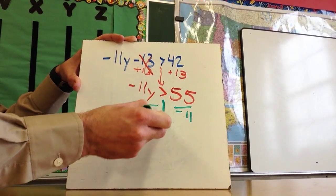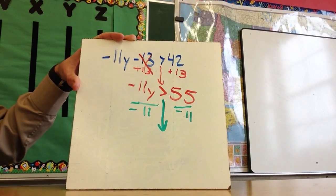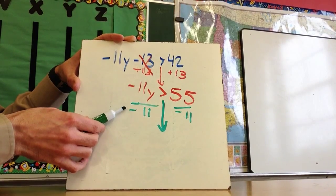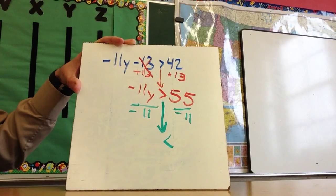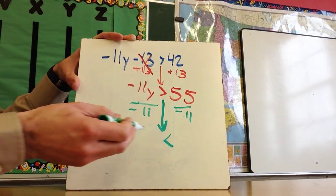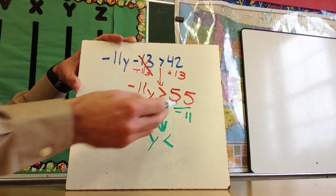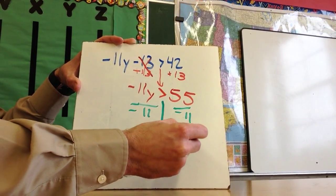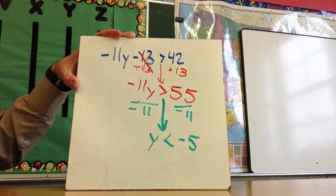Remember that this is my divider for the sides. Since I'm dividing by -11 and -11 is a negative number, the sign is going to flip, so now it's going to be facing that way. -11 divided by -11 gives me positive 1y, and then 55 divided by -11 is -5. So my final answer is y is less than -5.